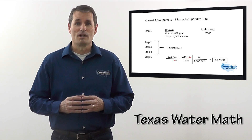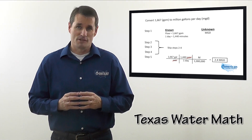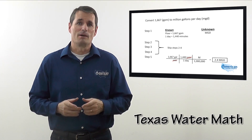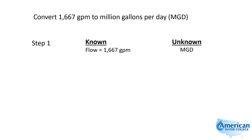I'm Joe Kirshner with American Water College. Watch as I use my five-step approach to solve this problem. This flow conversion problem reads: convert 1,667 gallons per minute to million gallons per day. So we're looking for MGD and they gave us a flow of 1,667 gallons per minute.